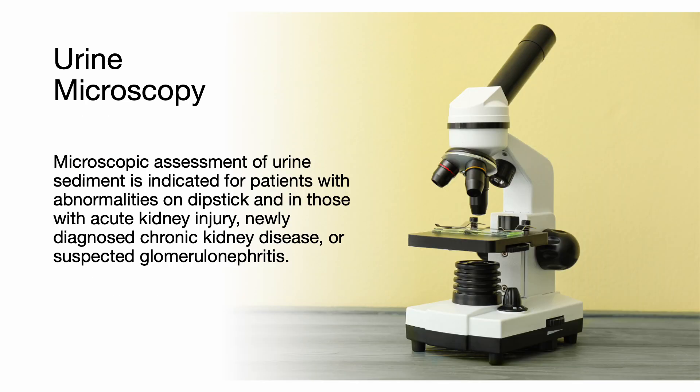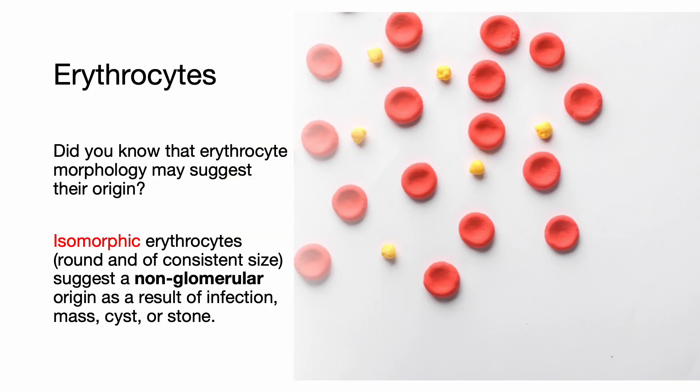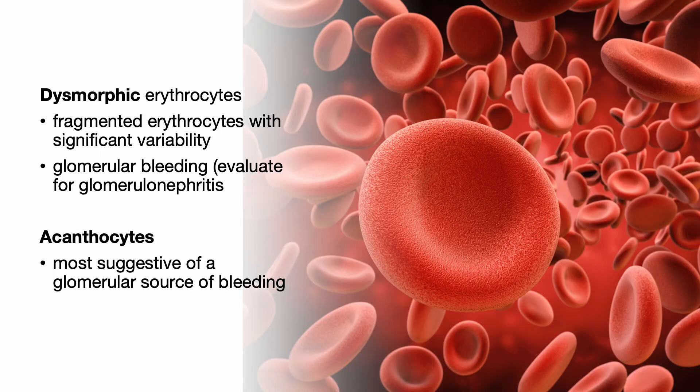Microscopic assessment of urine sediment is indicated for patients with abnormalities on dipstick and in those with acute kidney injury, newly diagnosed CKD, or suspected glomerulonephritis. Erythrocyte morphology may suggest their origin. Isomorphic erythrocytes, which are round and of consistent size, suggest a non-glomerular origin, likely from infection, mass, cyst, or stone. In comparison, dysmorphic erythrocytes, which are fragmented with significant variability, suggest glomerular bleeding. Acanthocytes, a form of dysmorphic erythrocytes characterized by vesicle-shaped protrusions, are most suggestive of a glomerular source of bleeding.